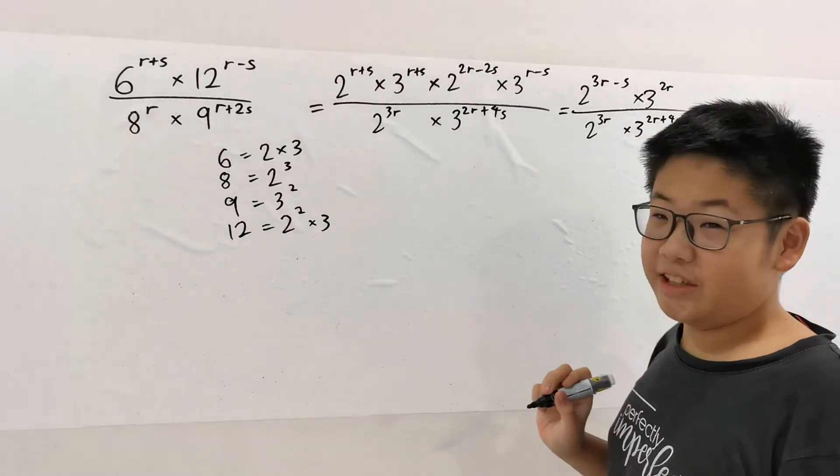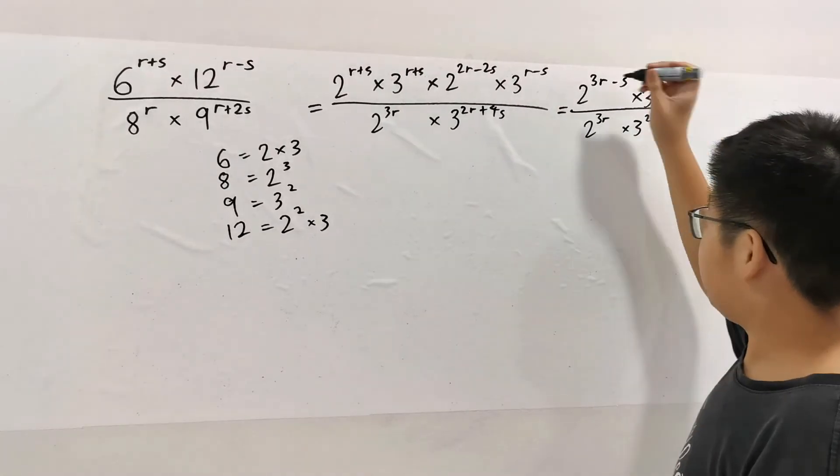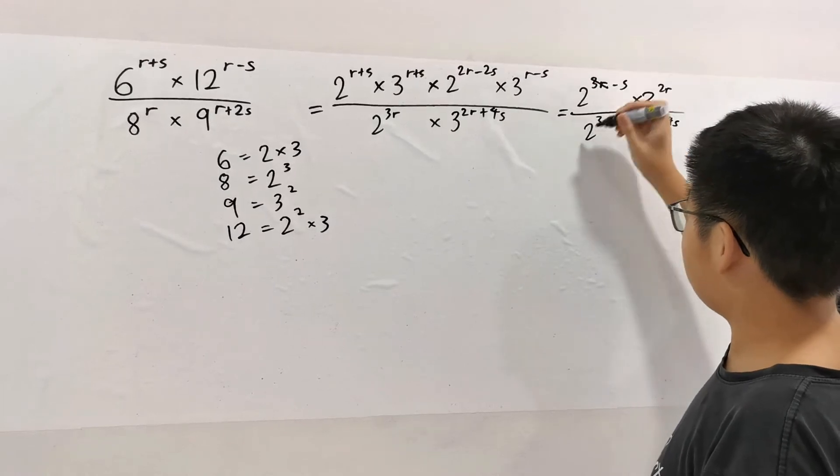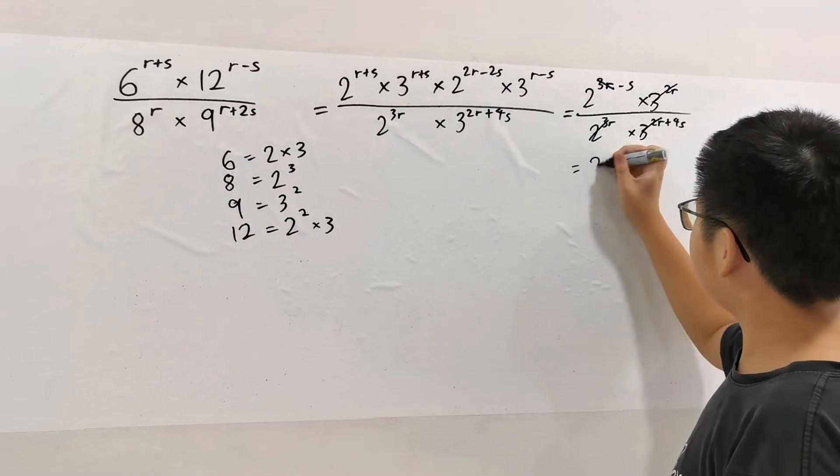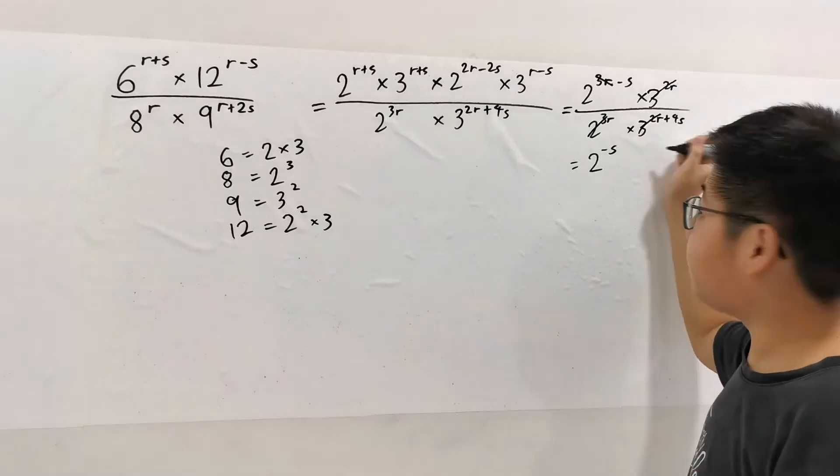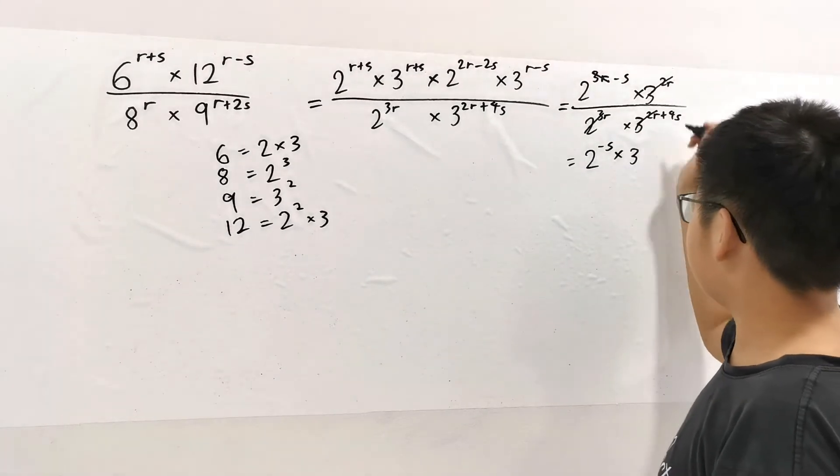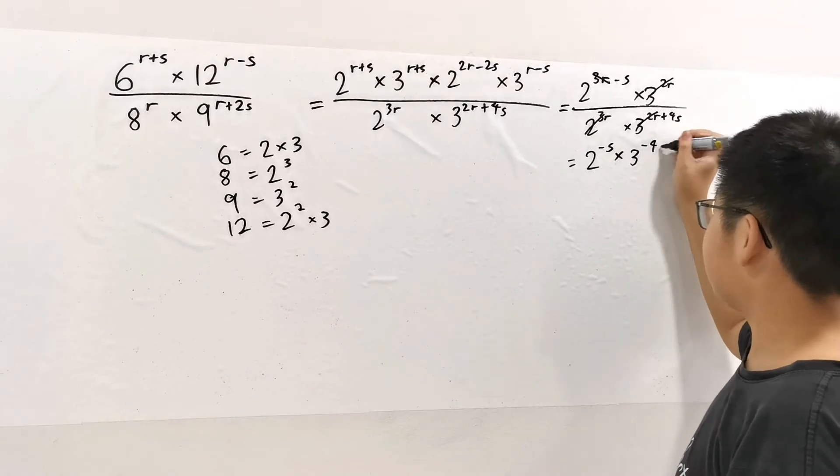Now we convert it into a fraction. What do we do? We cancel these out. So we have 2^(2R), this goes to 2^(-S). Since this is at the bottom, we have to get this negative power.